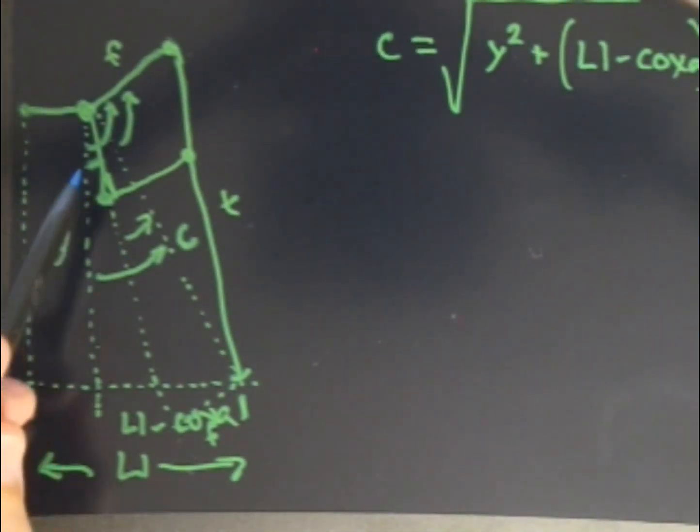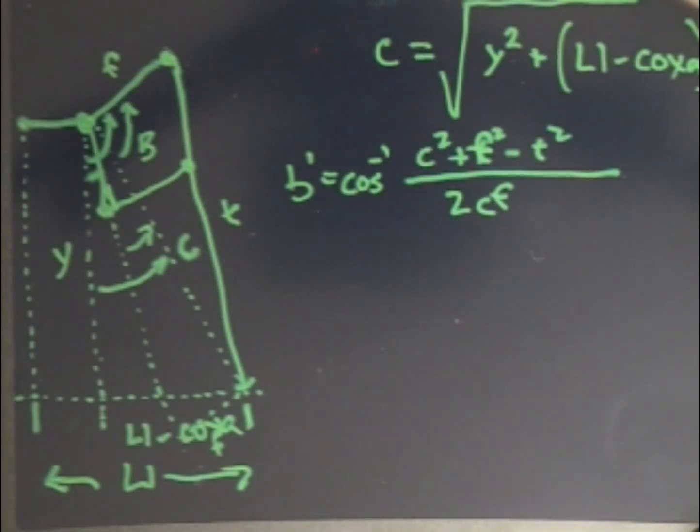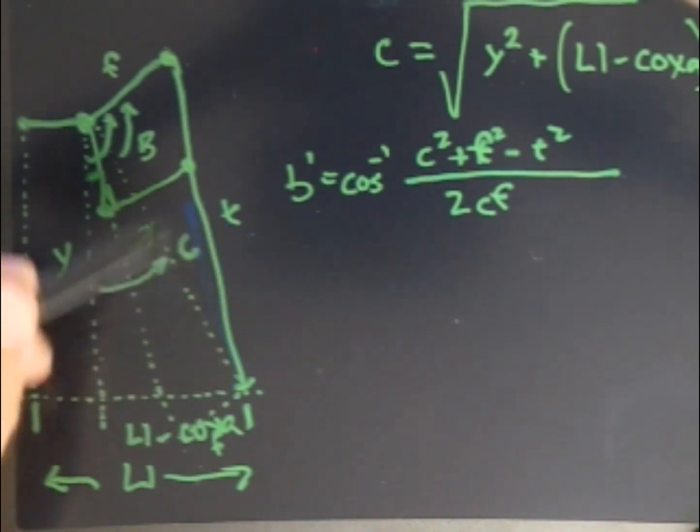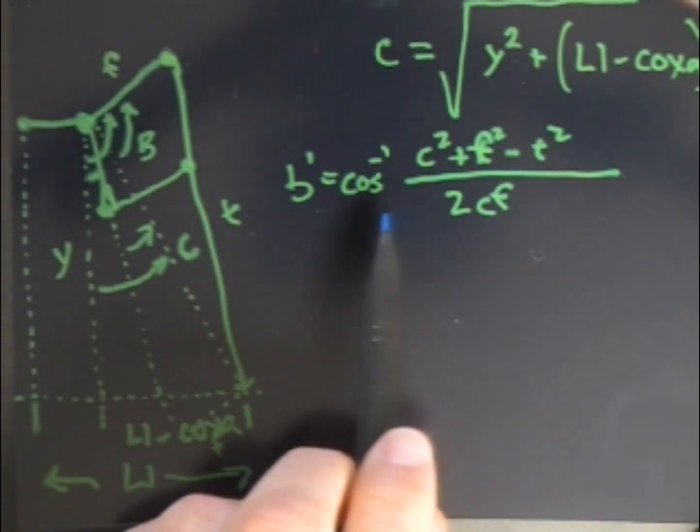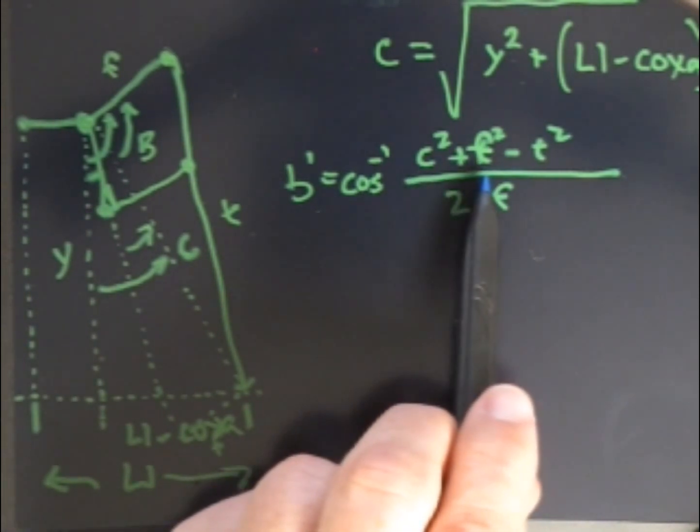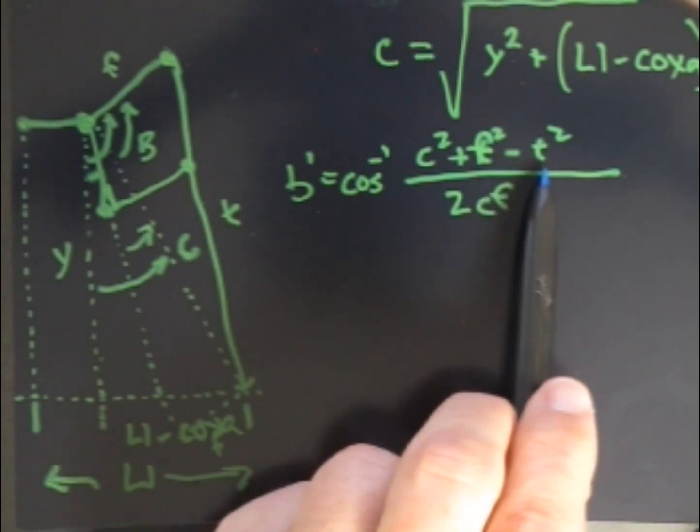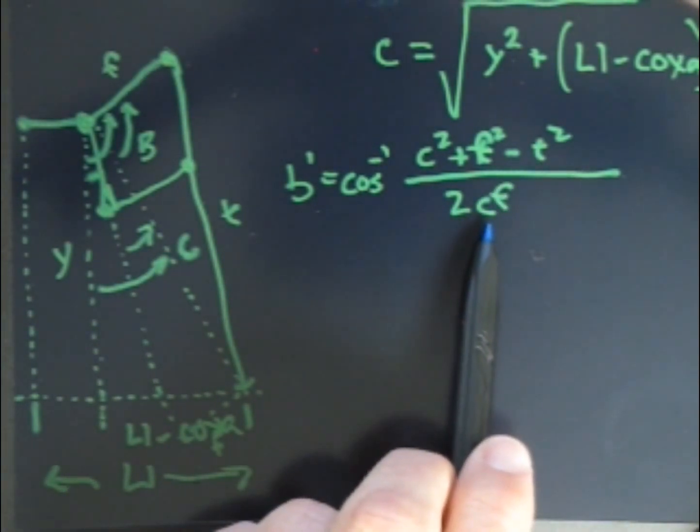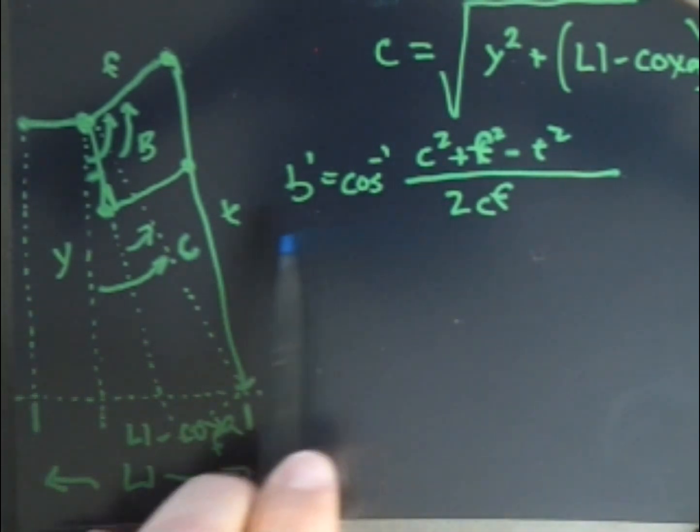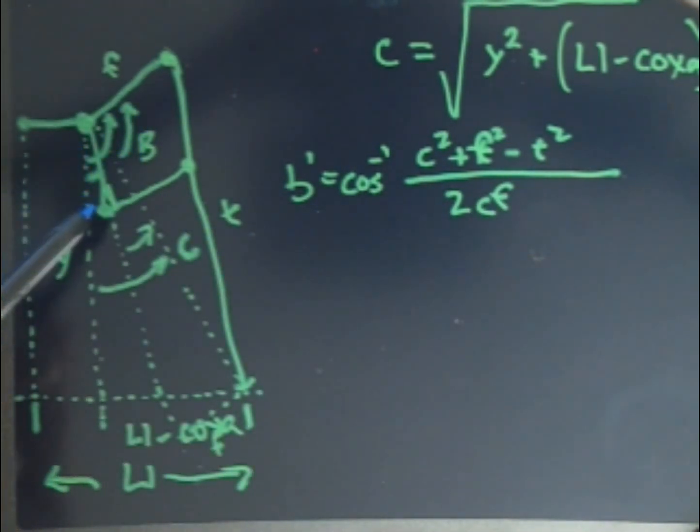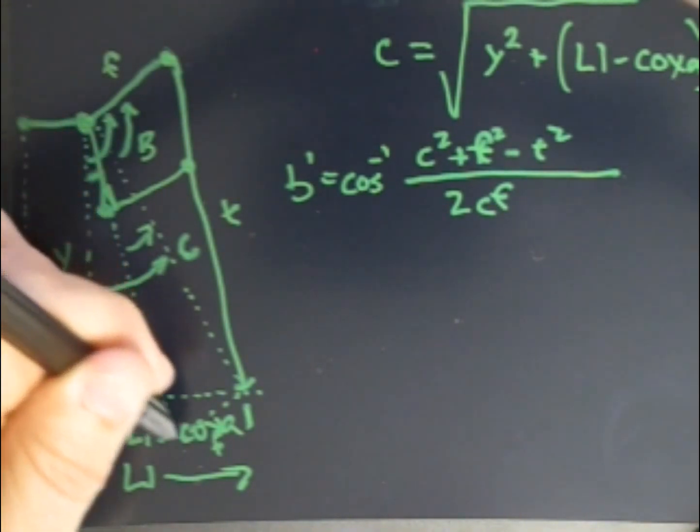So what we're going to do now is calculate this B angle right here, which makes up the triangle that goes to C, tibia, and femur. Using the law of cosines, we calculate that's going to be C squared plus the femur squared minus tibia squared divided by 2 times C times F. And now that's going to give me the Bravo angle. A similar calculation is going to calculate out this other angle right here, which is between this portion.